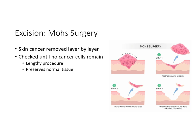Mohs surgery is a type of excisional treatment to remove an entire lesion. This is where skin cancer is removed layer by layer — this can potentially be done in one day. They attempt to remove all of a tumor and get clear margins, then a pathologist looks at the tissue under a microscope to check whether the margins are clear.